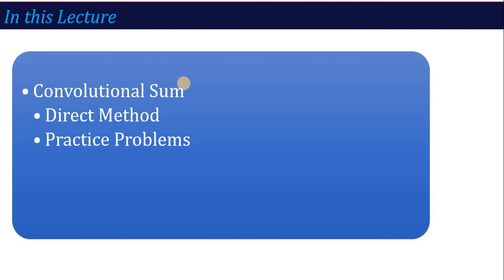Now, in a similar way, in this lecture we are going to talk about the convolution sum. What we covered in the last lecture was done in the continuous time domain, the CT system. Now we will talk about when there is a discrete time system — how do we calculate the output in that case? That particular thing is called convolution sum. As I mentioned in the last lecture, this method is basically called the direct method or graphical method.